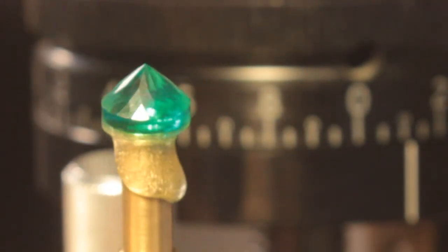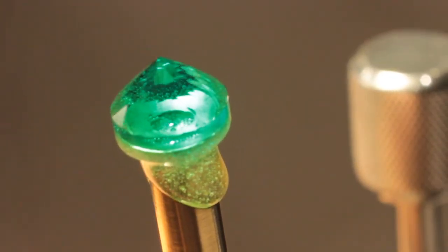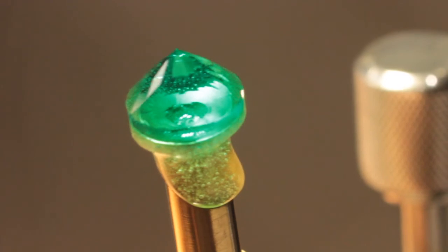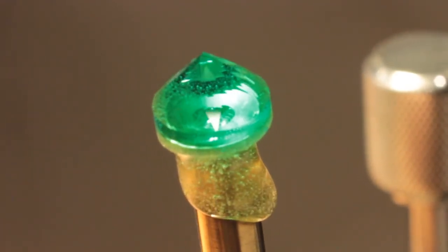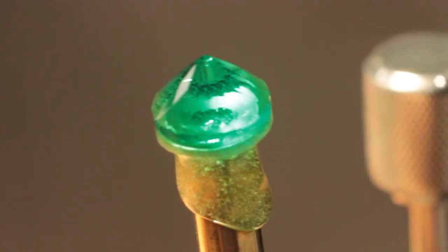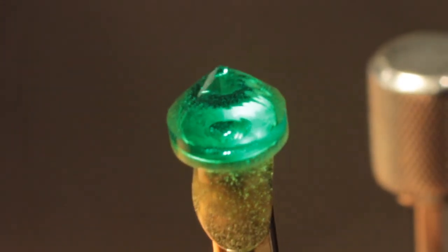So we're all set so far, so far so good. I finished polishing our smaller emerald with tin lap and cerium oxide. It polished up wonderfully. So now I will transfer it and cut the upper part of the crown.